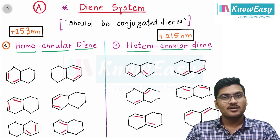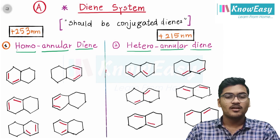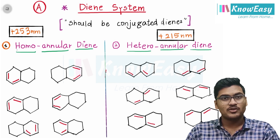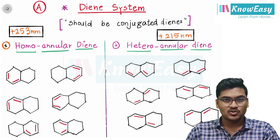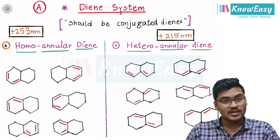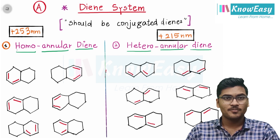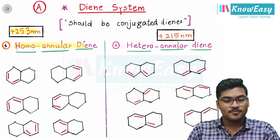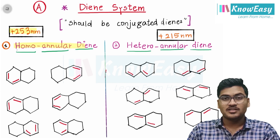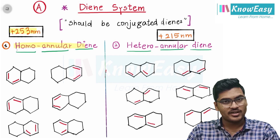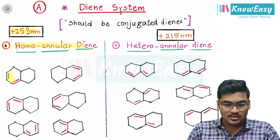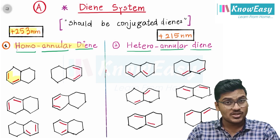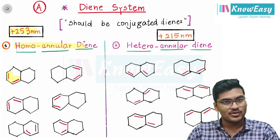Let's understand different representations of dienes — different representations of homoannular dienes, heteroannular dienes, and acyclic dienes. For homoannular dienes, the value is 253 nanometers. Homo means same — two bonds which are in conjugation are present in the same ring; that is called homoannular diene.